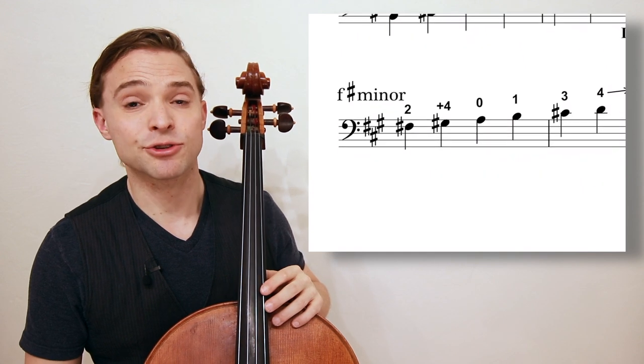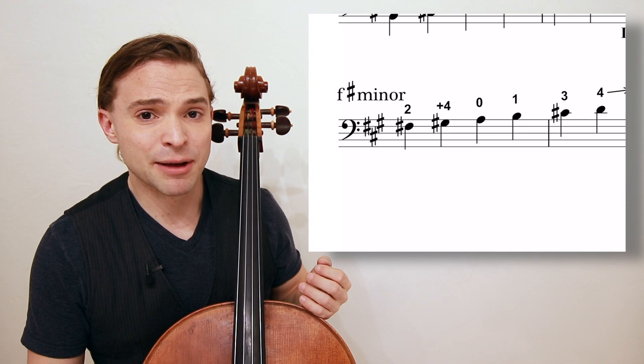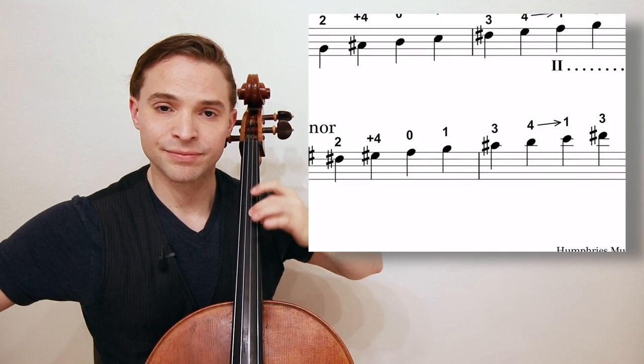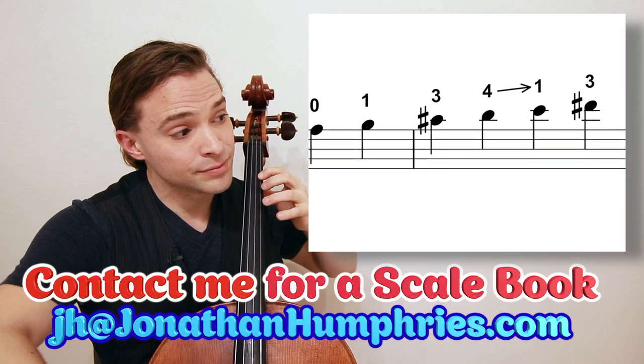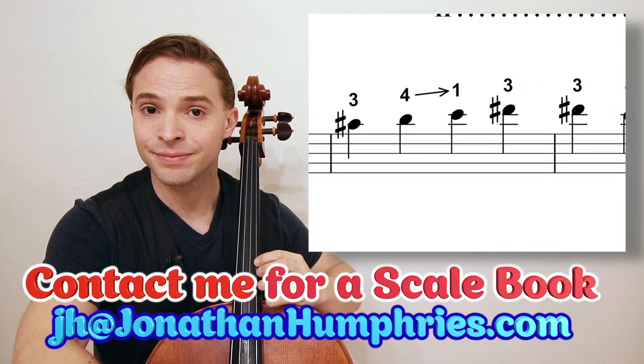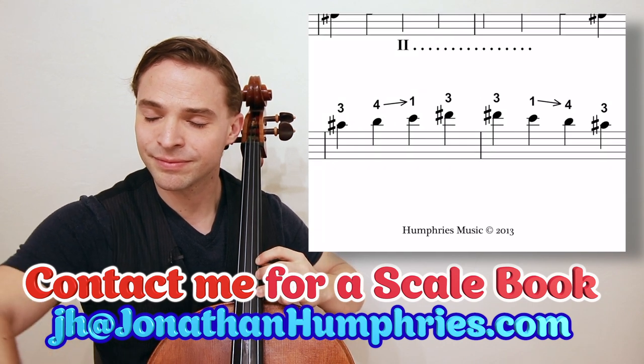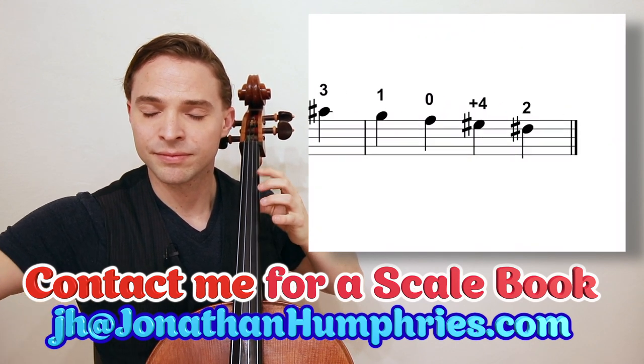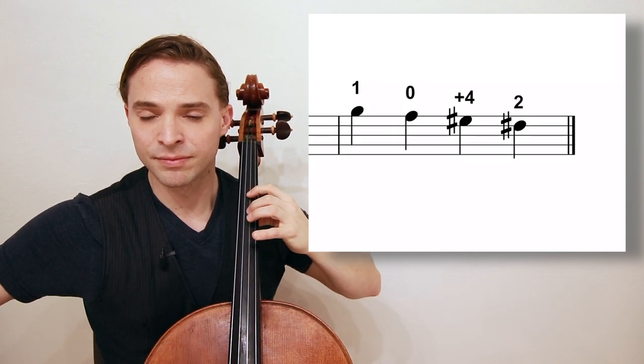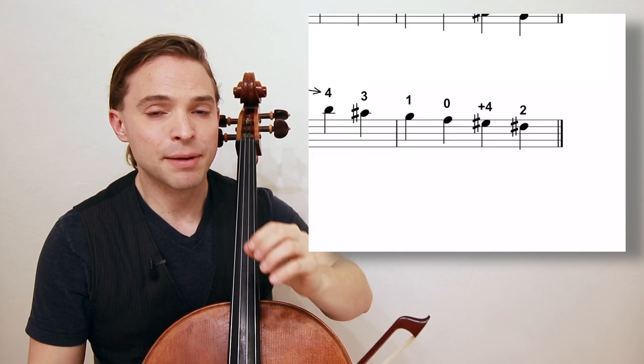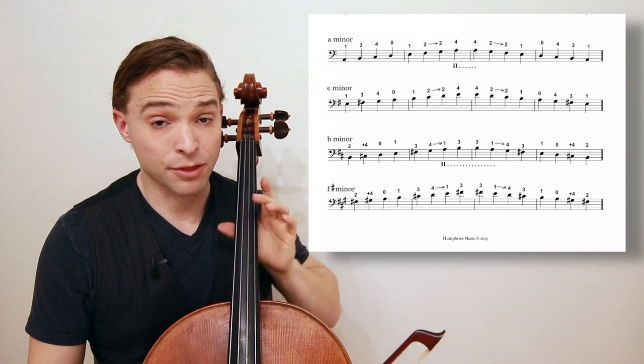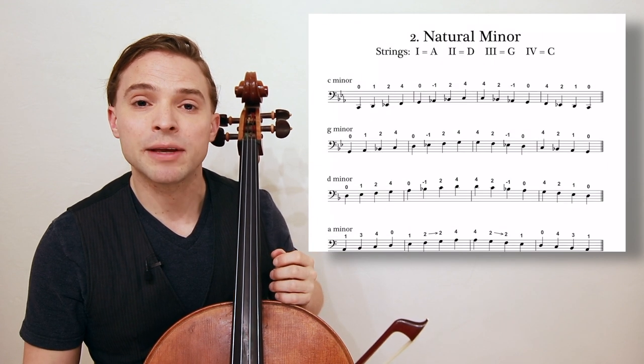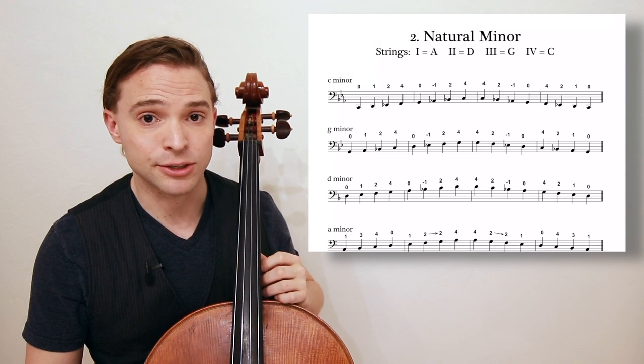The next scale is the F sharp minor, which is three sharps. Nothing to be scared about because you already know the fingerings. Look at the fingerings. The same as B minor. The thumb and the other fingers in the hand. Spacing those fingers out with your training and with your practice. You will be able to play your scales and your songs and your etudes much better.